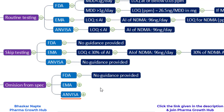FDA does not allow omission of the nitrosamine impurity from the specification. If your risk assessment concludes there is a possibility of nitrosamine formation in your product, routine testing of all batches is required — this is FDA's requirement. EMA, on the other hand, states that if the content of nitrosamine impurity is less than or equal to 10% of its acceptable intake, then there is no need to test the product for nitrosamine content, and you can omit it from the specification.